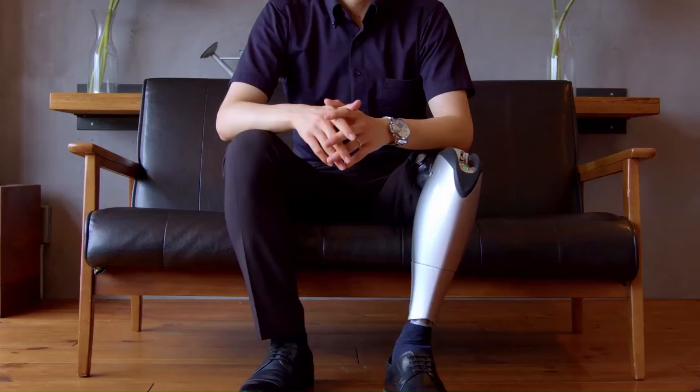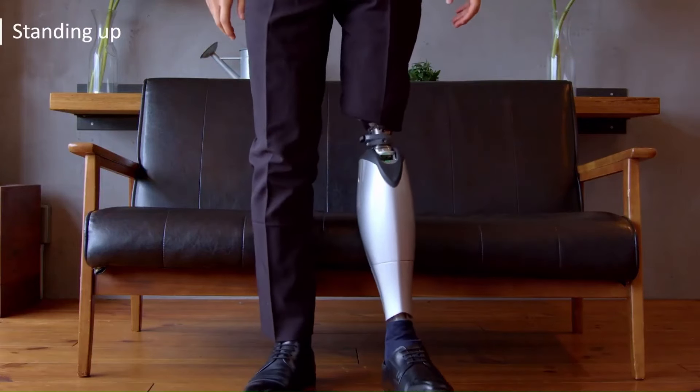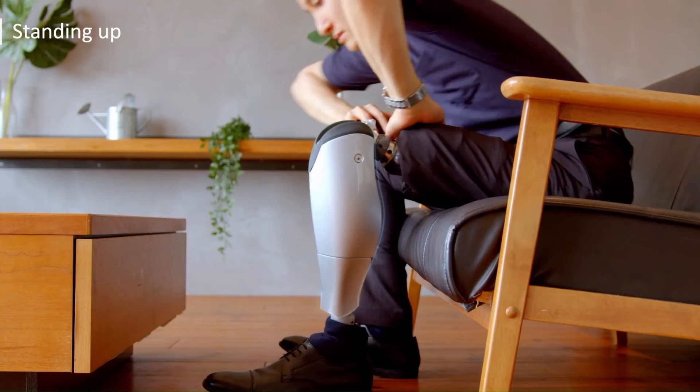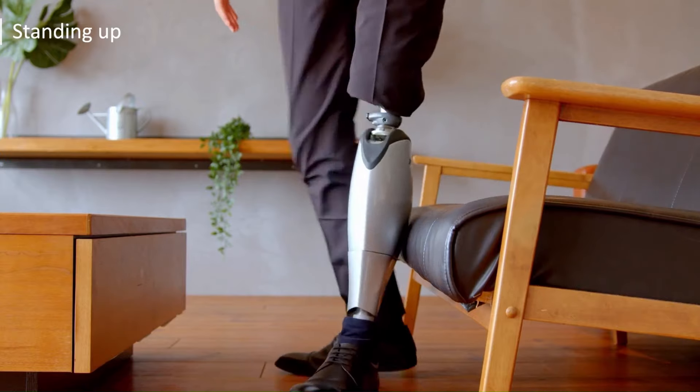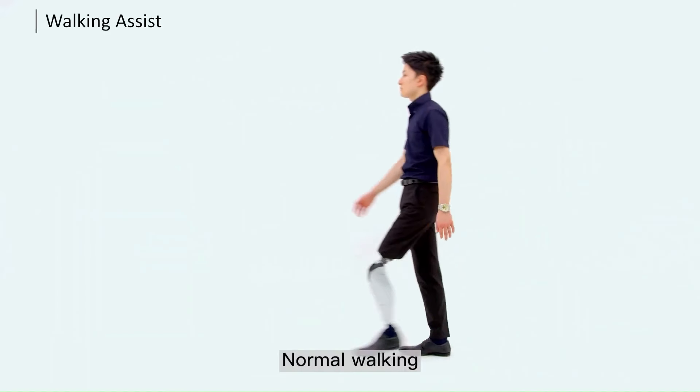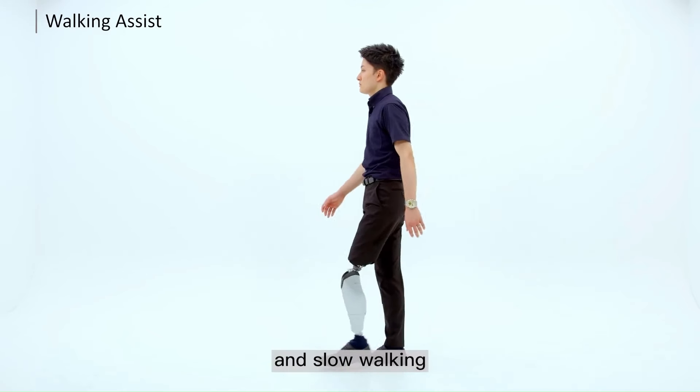Sensors. The BioLeg is equipped with multiple sensors, including gyroscopes and accelerometers, which help the microprocessor to understand the user's movement and intentions. This allows the leg to react quickly and smoothly to changes in terrain and activity.